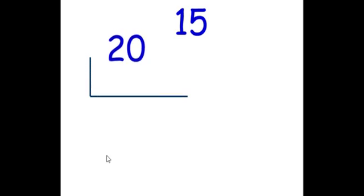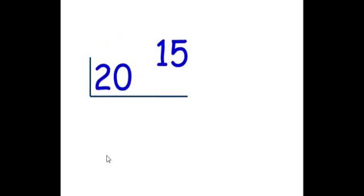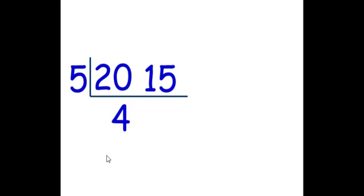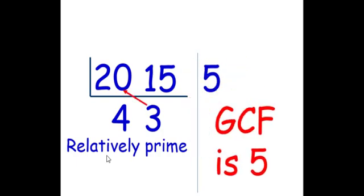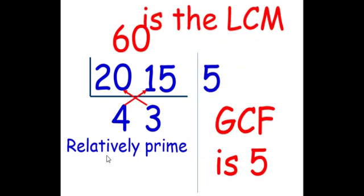When we take a look at 20 and 15, pause the video so you can try and think about it beforehand. And in this case, it would be 5. We could factor out a 5. 20 divided by 5 is 4. 15 divided by 5 is 3. Our two relatively prime numbers. 5 is our GCF and 60 is our LCM.